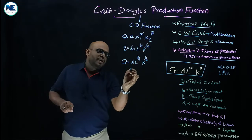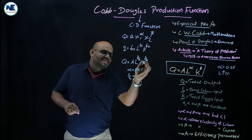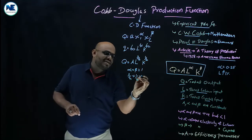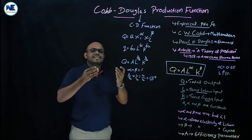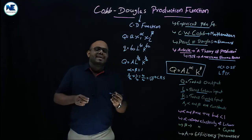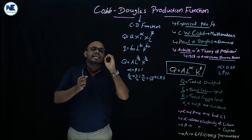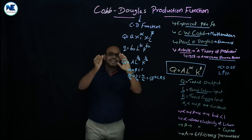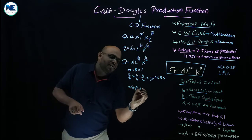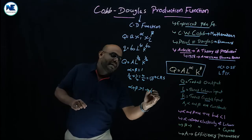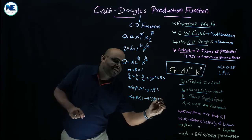That is why we can say alpha plus beta equals 1: alpha (3/4) plus beta (1/4) equals 4/4 = 1. When alpha + beta = 1, the Cobb-Douglas production function generates constant returns to scale and represents a linearly homogeneous production function of degree 1. If alpha + beta is greater than 1, it shows increasing returns to scale; if alpha + beta is less than 1, it shows decreasing returns to scale.